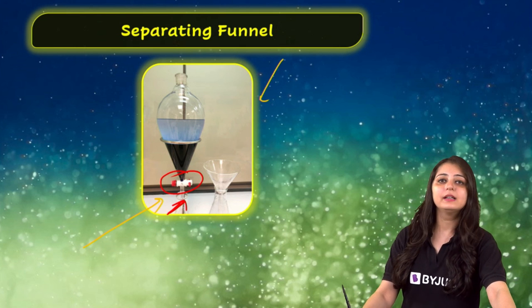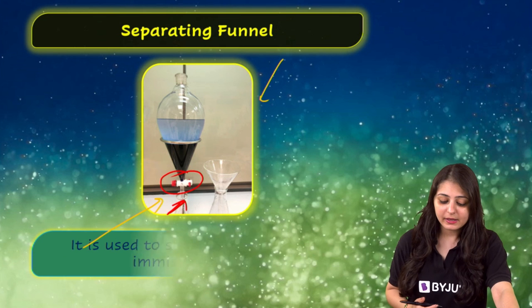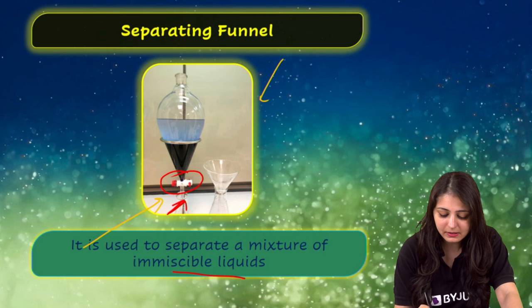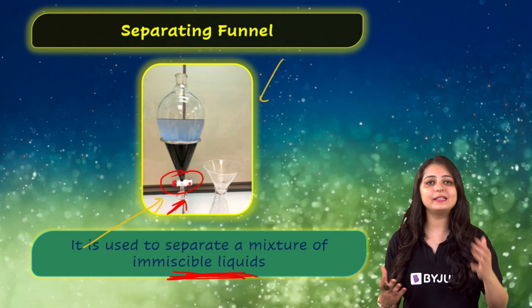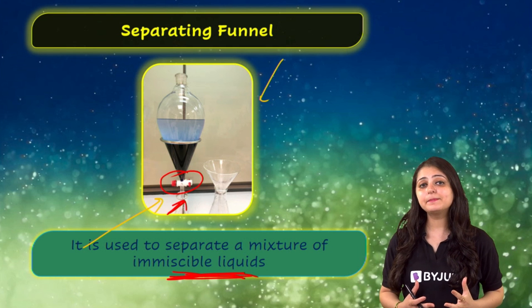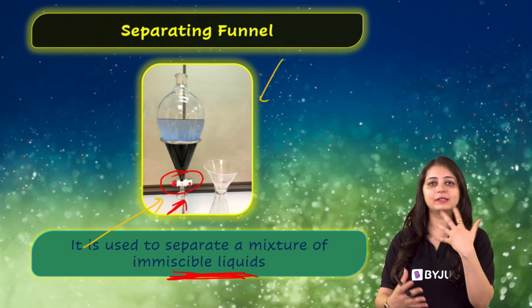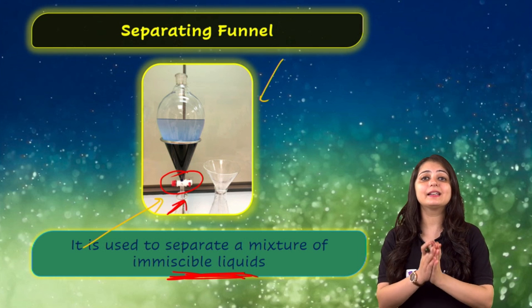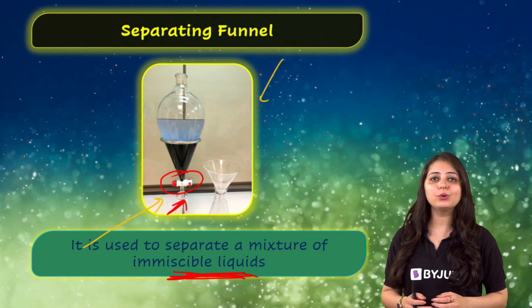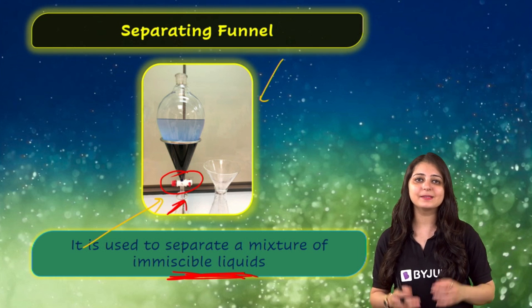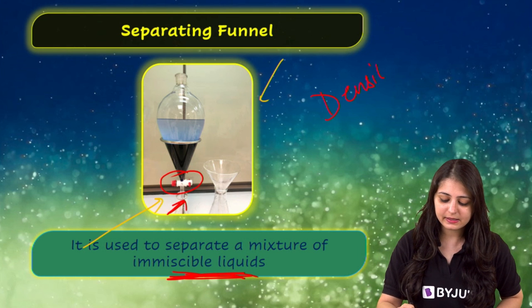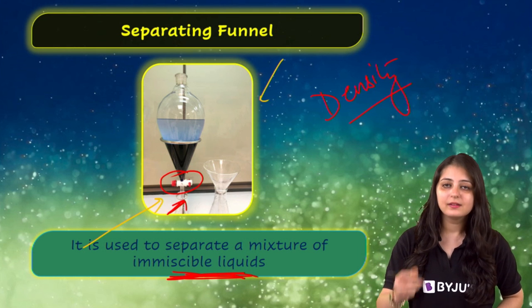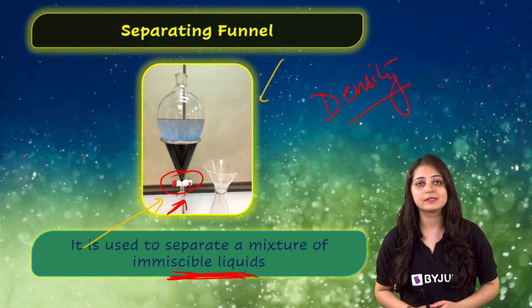Coming back to oil and water — these are immiscible liquids. Immiscible liquids means they do not mix with each other. The main principle for separation that we are using is that immiscible liquids separate out into layers based on their density.